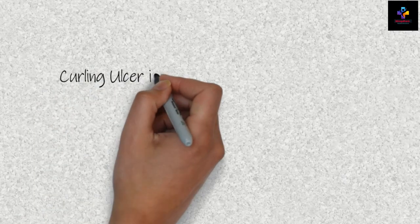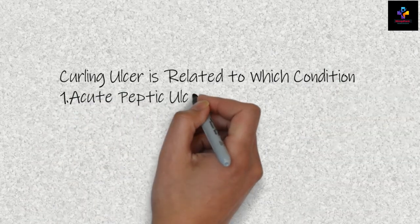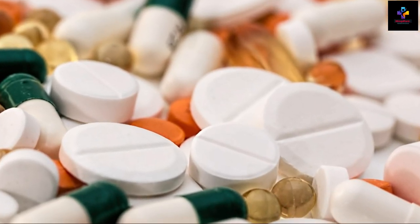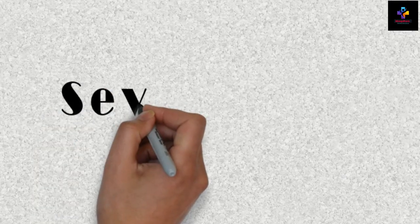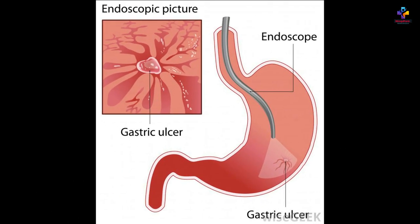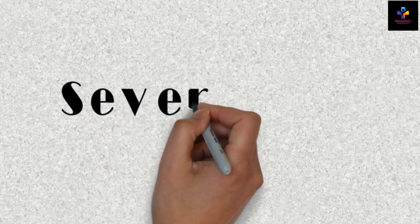The next question: curling ulcer is related to which condition? Options are acute peptic ulcer, cerebral trauma, severe burn, or after giving NSAID. Curling ulcers are created after severe burn. Curling ulcer is an acute gastric erosion resulting as a complication from severe burn.